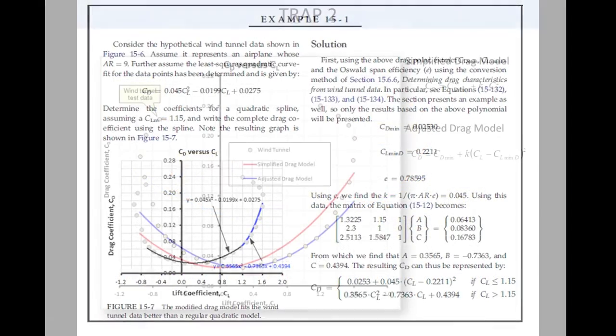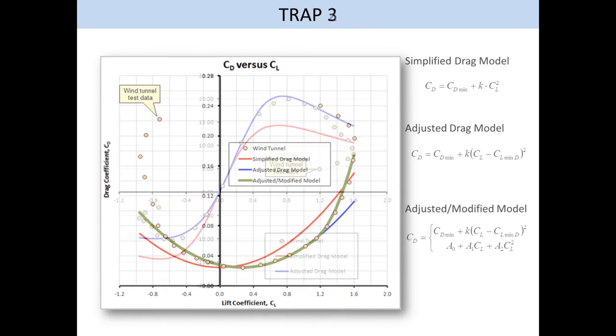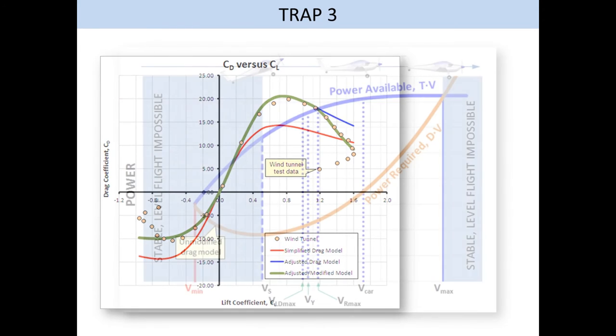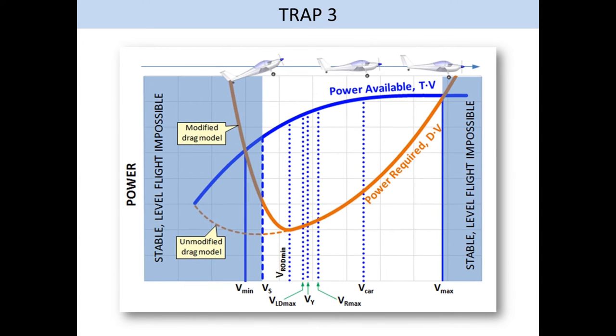The method generates a smooth transition between the two curves. Below that value, use the adjusted drag model. Above, the spline. You can see the previous drag polar here before and after. Here is the resulting lift-to-drag ratio as function of lift coefficient, before and after. And here is the effect on the power map, before and after. You can see that this moves the theoretical minimum airspeed much closer to the stalling speed, improving low-speed performance predictions.